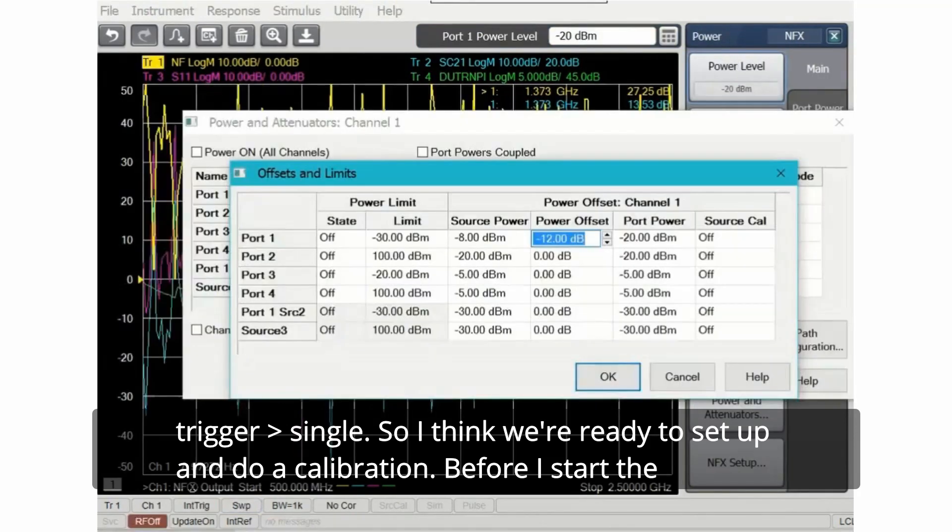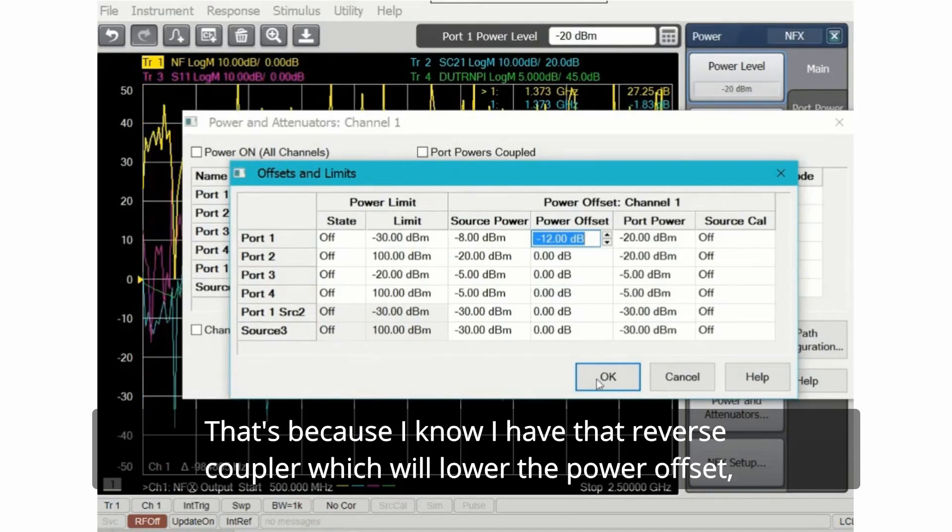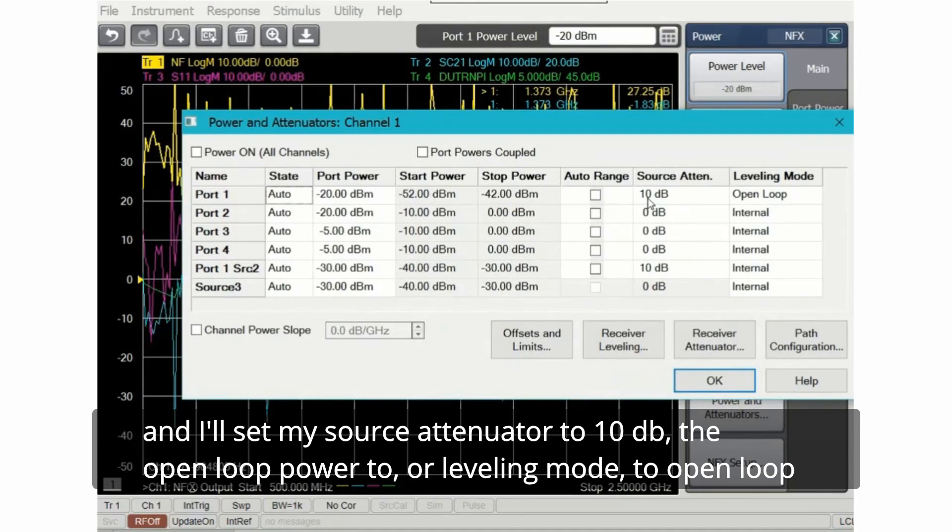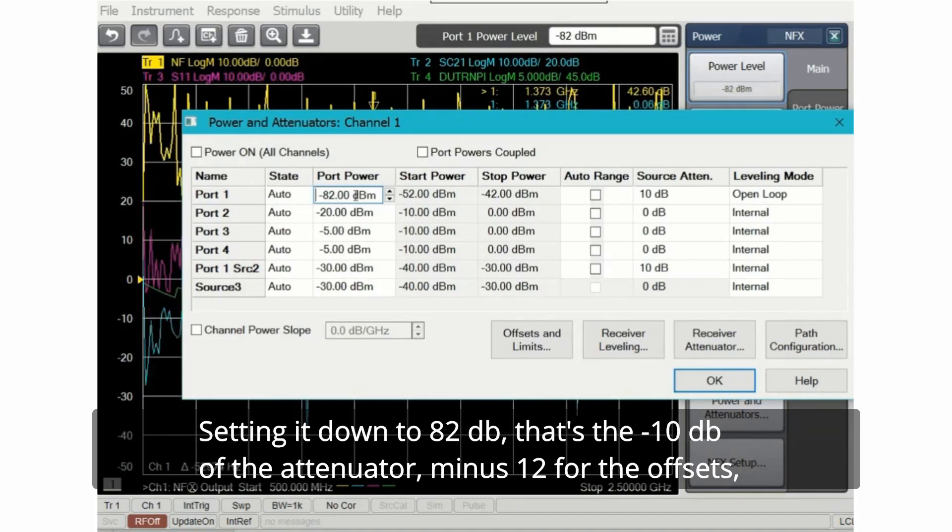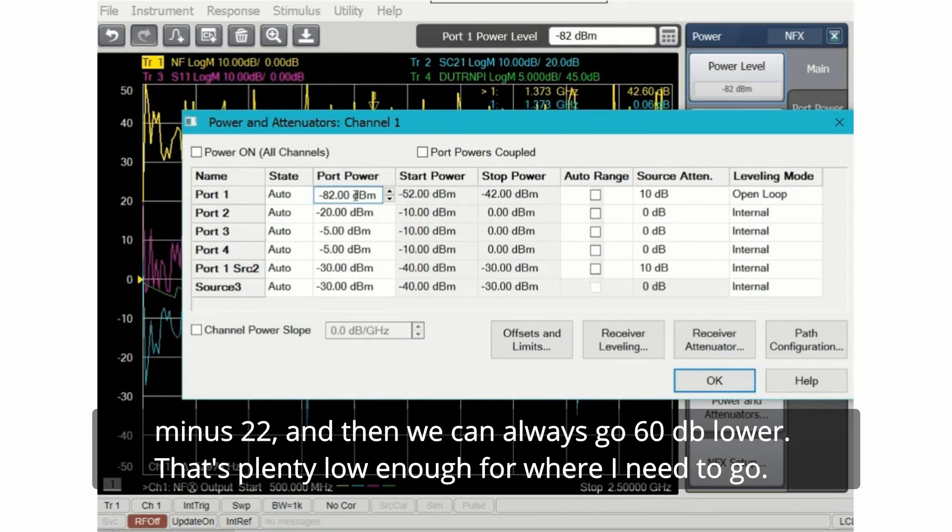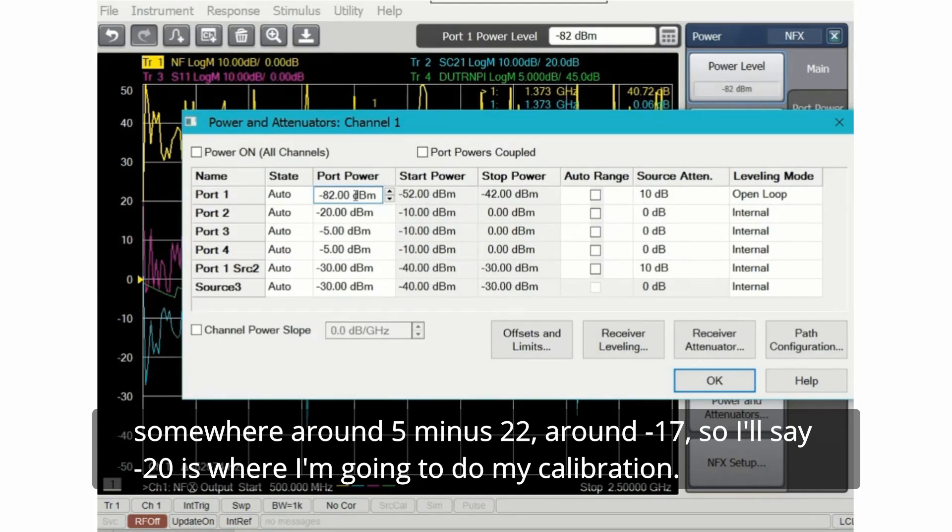Before I start the calibration, I'm going to set the power offset in the channel to minus 12 dB. That's because I know I have that reverse coupler which will lower the power offset. I'll set my source attenuator to 10 dB, the open loop power leveling mode. And that means I can set my power down as low as, well we'll say 100 and see what it says. I can get it down to 82 dB. That's the minus 10 dB of the attenuator, minus 12 for the offsets, minus 22, and then we can always go 60 dB lower. That's plenty low enough. Usually I want to keep about not go more than 5 dB above the attenuator plus the loss, so that'll be somewhere around 5 minus 22, around minus 17. So I'll say minus 20 is where I'm going to do my calibration.